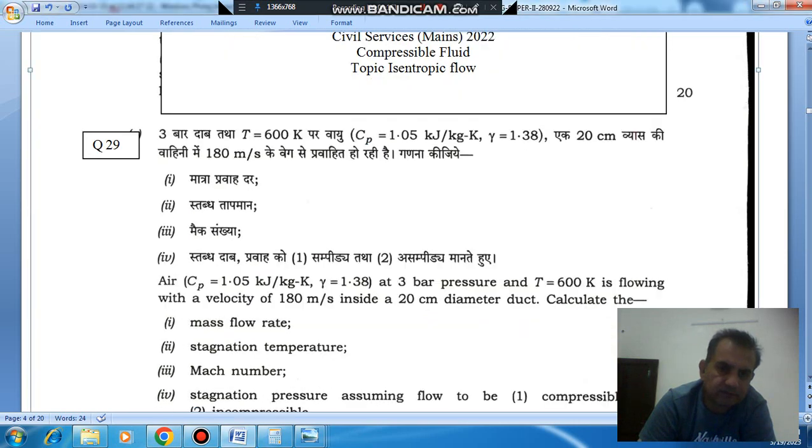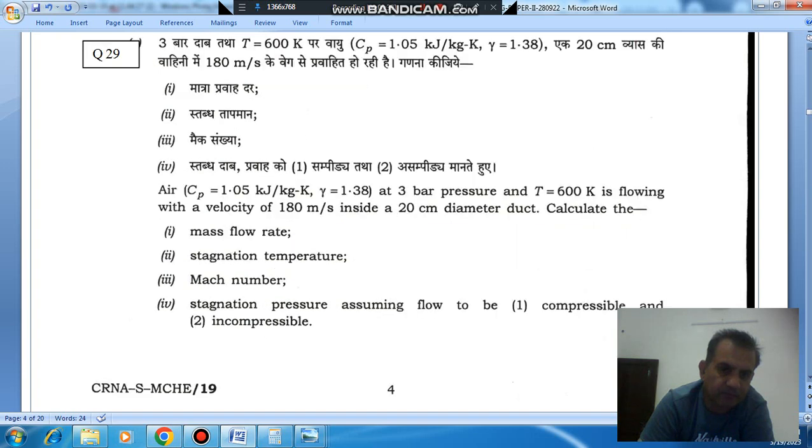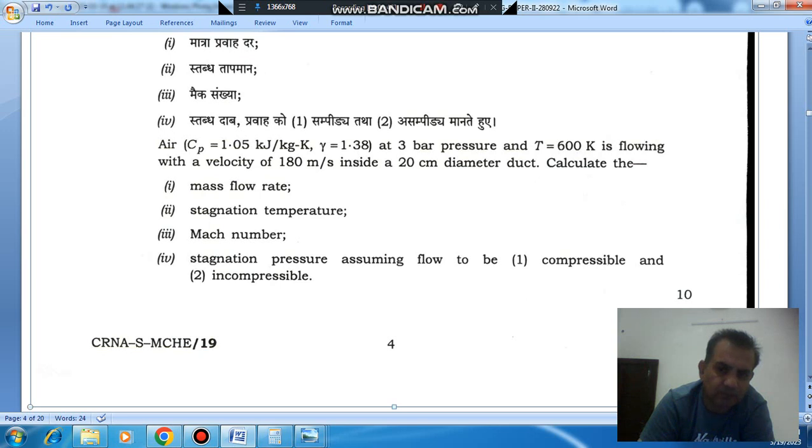Air at Cp equal to 1.05 kilojoules per kilogram Kelvin, gamma equal to 1.38, at 3 bar pressure and T 600 Kelvin is flowing with a velocity of 180 meters per second inside a 20 centimeter diameter duct. Calculate: 1, mass flow rate; 2, stagnation temperature; 3, Mach number; 4, stagnation pressure, assuming the flow to be 1 compressible and 2 incompressible.